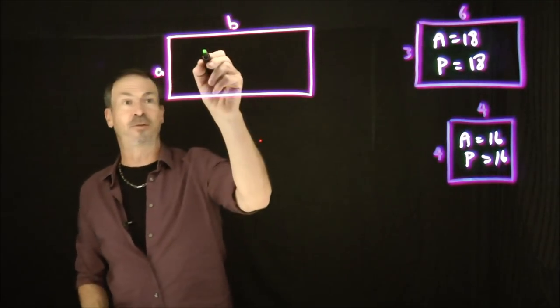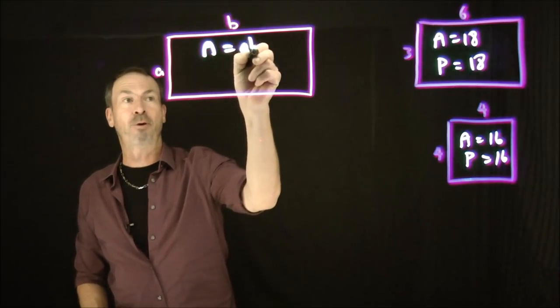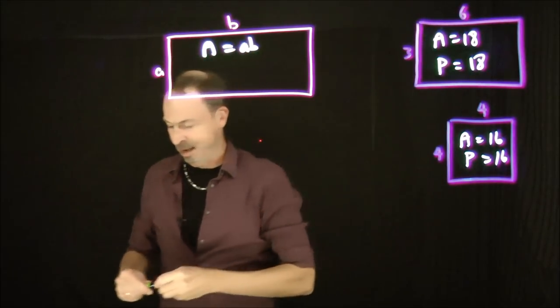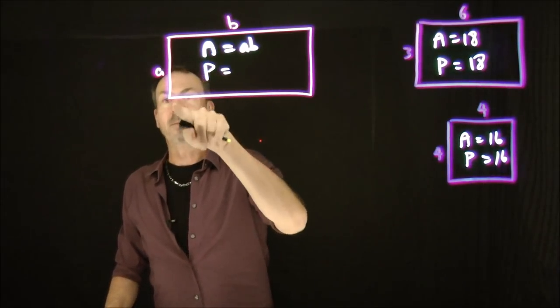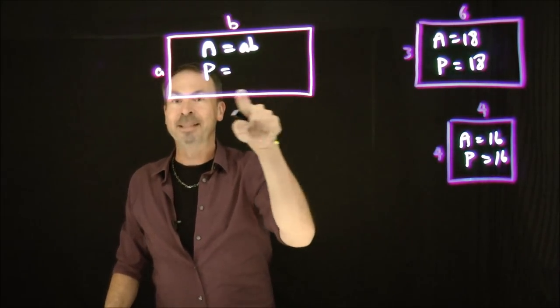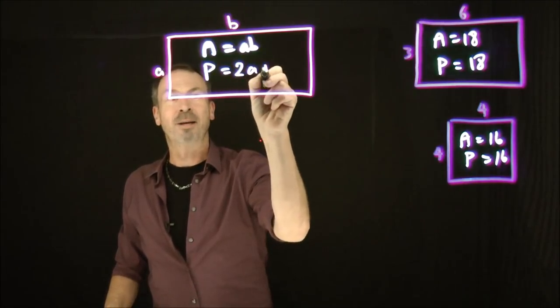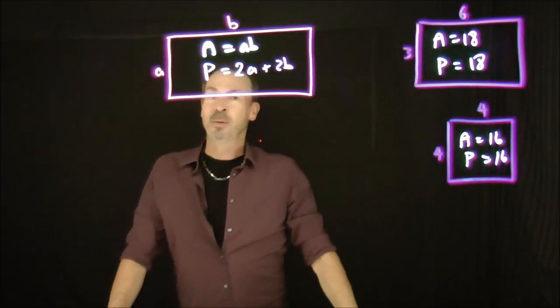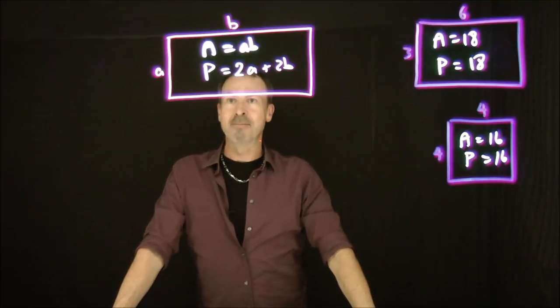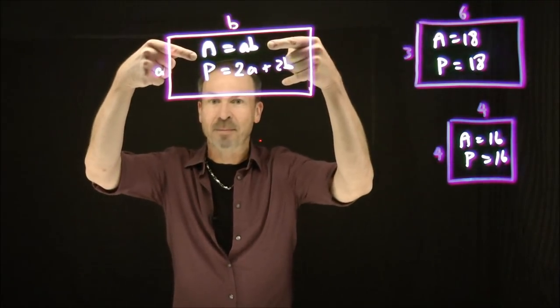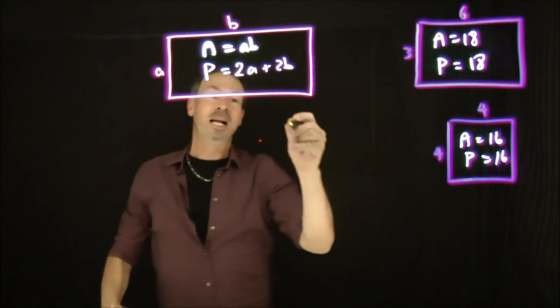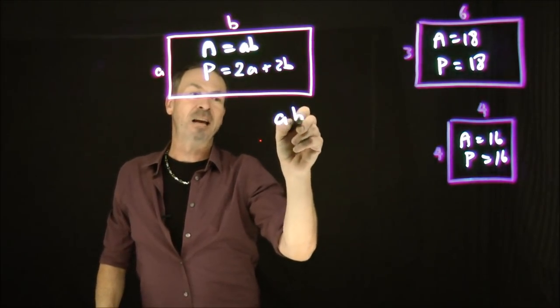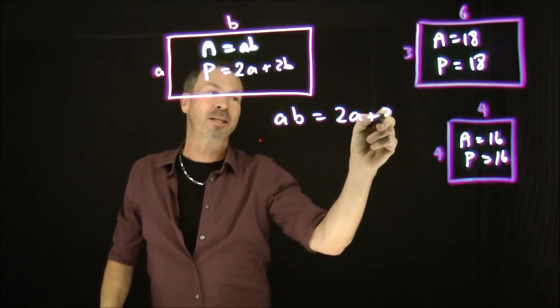Well, the area is going to be its length times breadth, A times B. And then its perimeter is going to be A plus B plus another A plus another B, so it's two A's plus two B's. So we're looking for integers, whole numbers A and B, which give A times B the same value as two A plus two B. That is, we want to find integers such that A times B is two A plus two B.